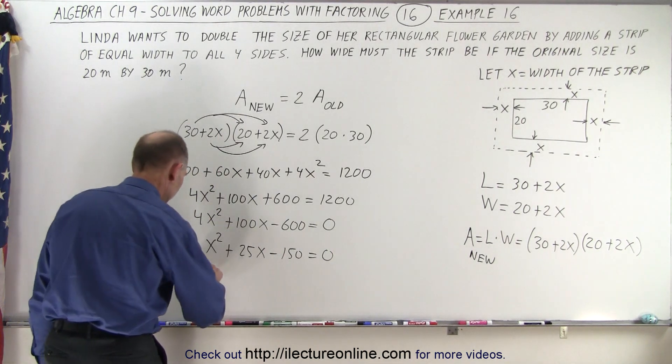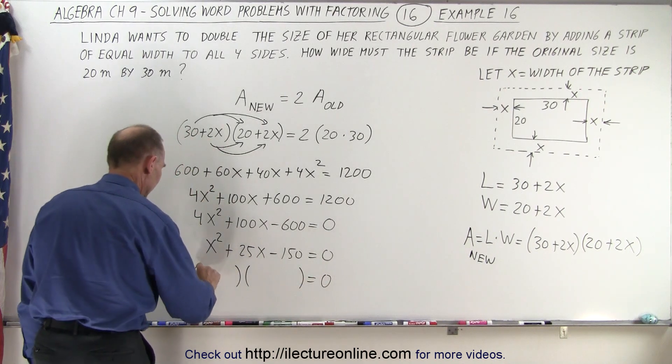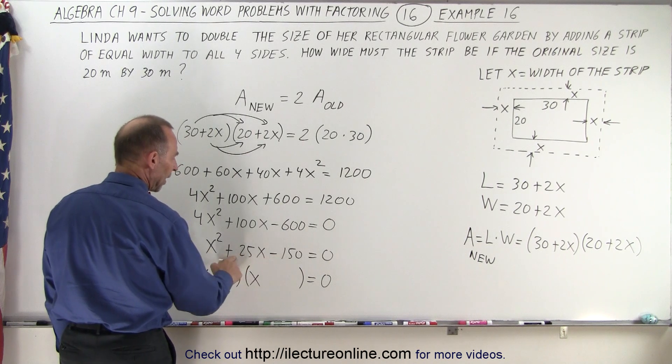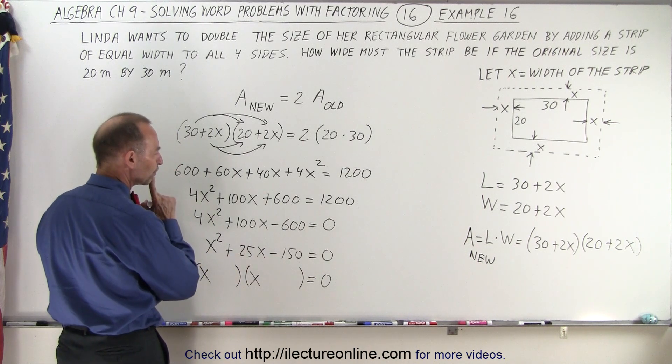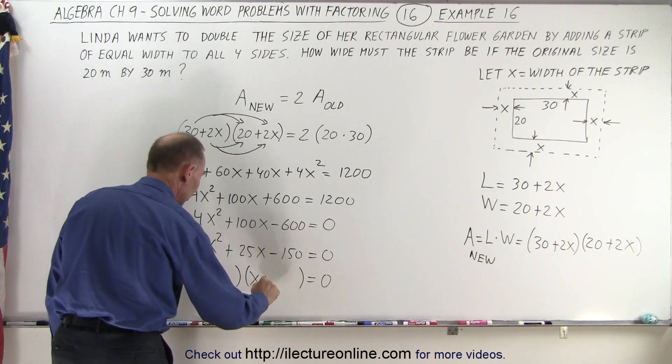Let's see here. We can factor that. On the left side we get x and x. Notice we have a negative here and a positive there. That means that one must be positive and one must be negative. Negative and positive. And the difference between them must be 25.